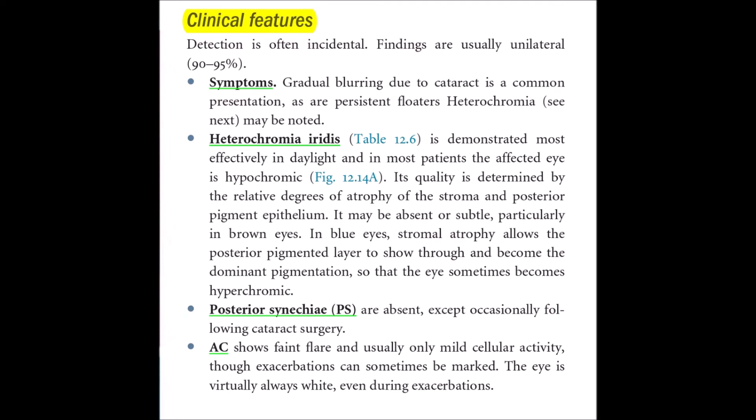Clinical features include detection which is often incidental. Findings are usually unilateral in 90 to 95 percent of cases. Symptoms include gradual blurring due to cataract formation and persistent floaters. Heterochromia may also be noted. Heterochromia iridis is demonstrated most effectively in daylight and in most patients the affected eye is hypochromic. Its quality is determined by the relative degree of atrophy of the stroma and posterior pigment epithelium.